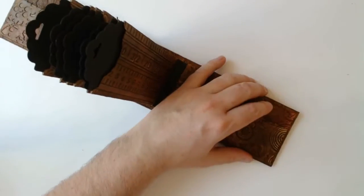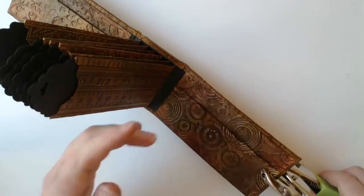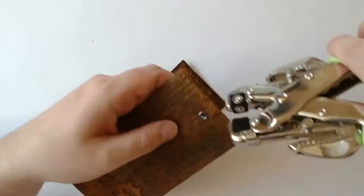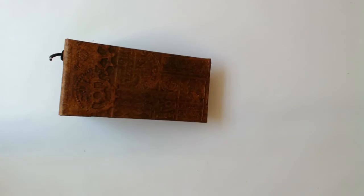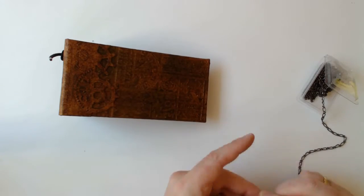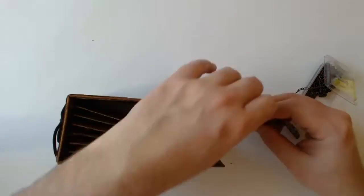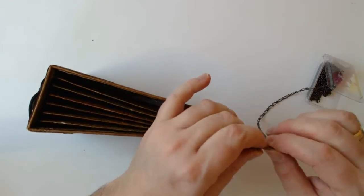For the closure I'm punching a hole into the back cover and filling it with an eyelet. I'm threading a chain through it as well as through a metal clip. This turned out to be a little bit fiddly but finally I made it.